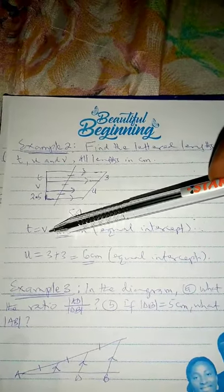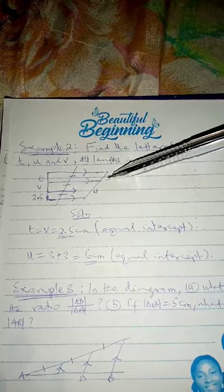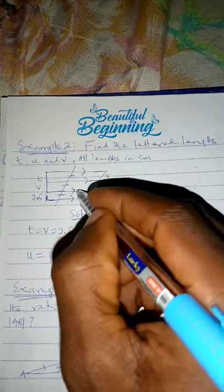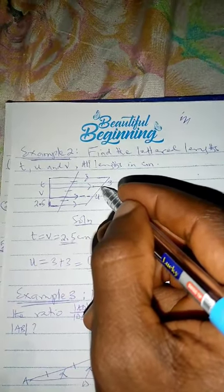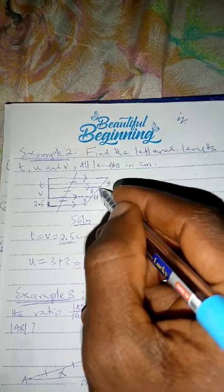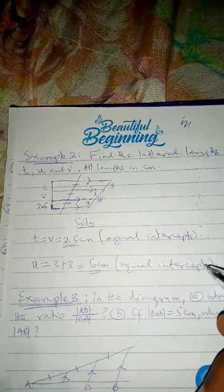That's why T equals V, which is 2.5 cm. For U, this intercept is 3. You need to do some construction here. When you make your construction and complete it, you discover that this segment will be 3 and this segment will also be 3. And from here to here is U. Therefore, U will be 3 plus 3, which is 6 cm. Equal intercepts — that's what happens. And that's how you solve that.